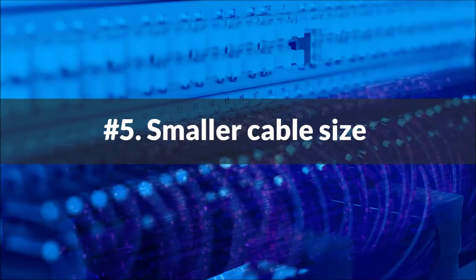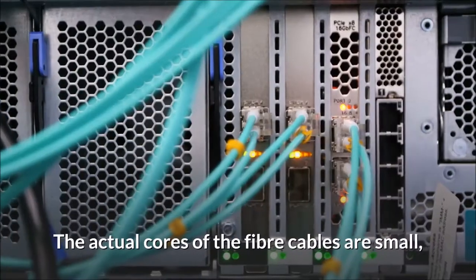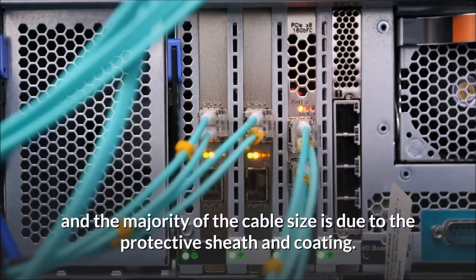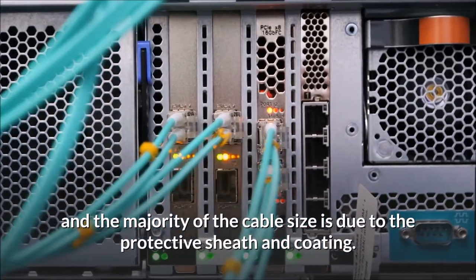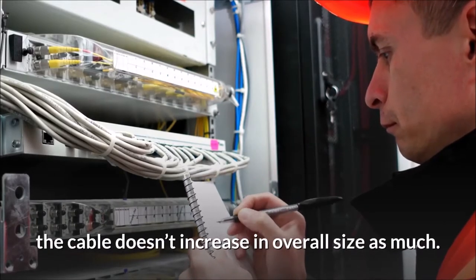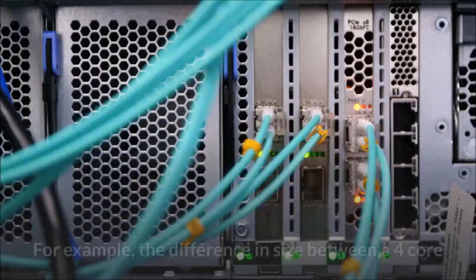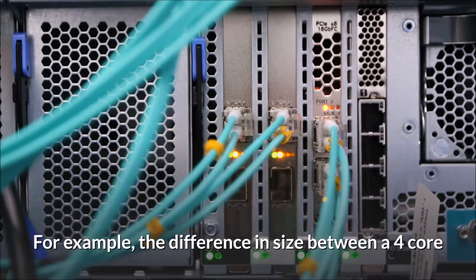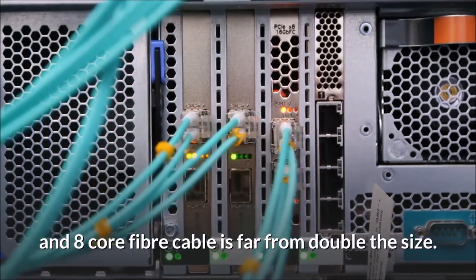Number 5: Smaller Cable Size. The actual cores of the fiber cables are small, and the majority of the cable size is due to the protective sheath and coating. Therefore, as core sizes increase, the cable doesn't increase in overall size as much. For example, the difference in size between a 4-core and 8-core fiber cable is far from double the size.